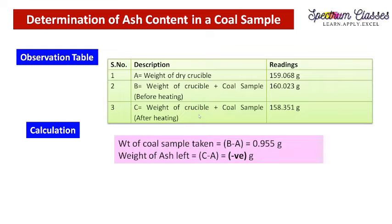To determine the ash content weight, take the weight of the crucible plus coal sample after heating, then remove the ash from the crucible and weigh that crucible without the ash. From there you can measure the ash content accurately; otherwise you will get a negative value.